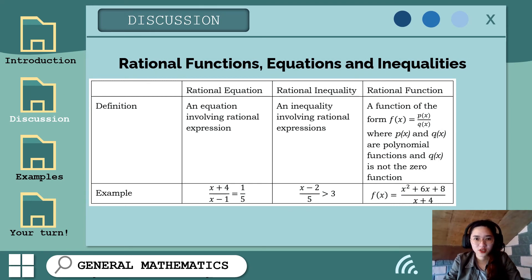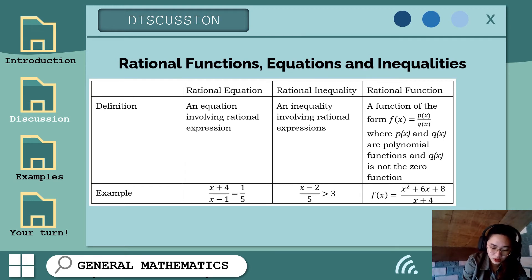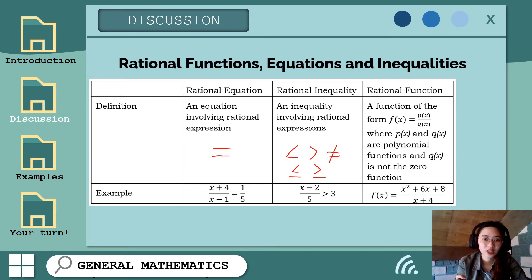So aside from rational function, pag-uusapan din natin yung rational equation at rational inequalities. Pero ano nga ba ang pinagkaiba-iba nitong tatlong ito? So remember na kapag sinabi nating function, there is a relationship between your range and domain or x and y. Pag equation naman, it is a mathematical statement showing an equality, so yung symbol natin dito is equal sign. Sa inequality naman, it is a statement that shows inequality. So yung mga symbols natin dyan involves yung less than, yung greater than, not equal, less than or equal, or greater than or equal. At kapag itong mga ito involves rational expression, ito na po ay tinatawag na nating rational equation, rational inequality, at rational function. Kung maaalala ninyo kapag sinabi nating rational expression, ito yung mga expression that shows ratio or fraction. So ito yung mga example nya.